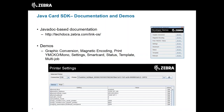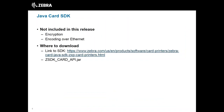A couple of things not included in this release of the SDK are general encryption and smart card encoding over Ethernet, which is something included in the Z-Motif version but requires an additional SDK on top of that. That functionality is not included in this version. If you'd like to download the Java Card SDK, the link is on the slide, or you can go to zebra.com and get it from under Software Card Printer Downloads.